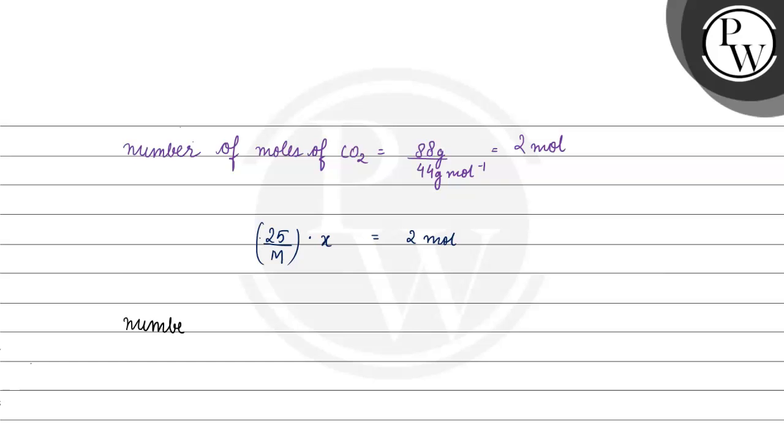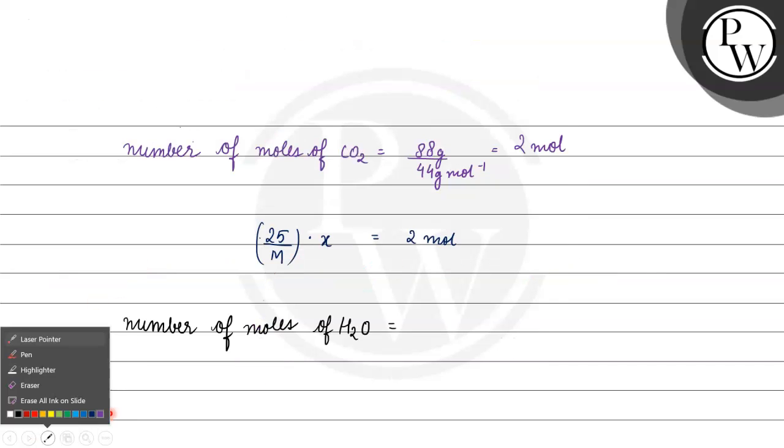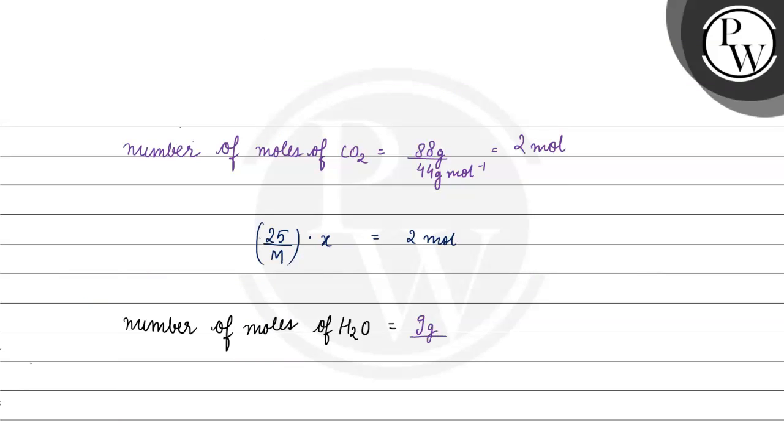Now let's see the number of moles of water. The mass of water is 9 grams, so we have 9 grams divided by the molecular mass of water, which is 18 grams per mole, giving us 1 by 2 moles.